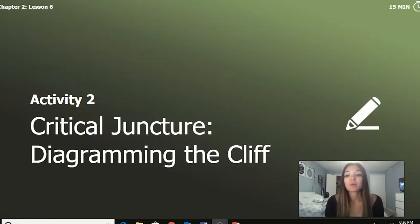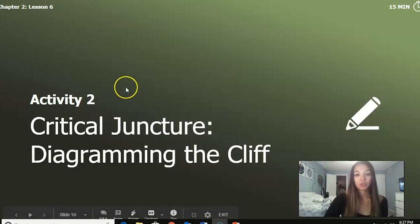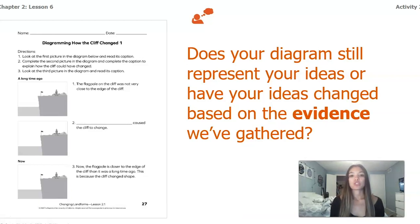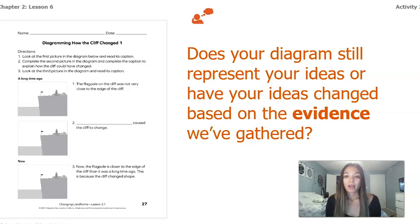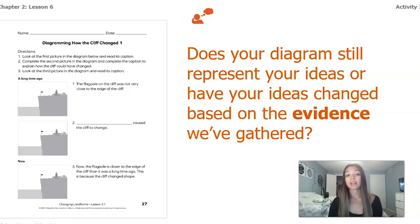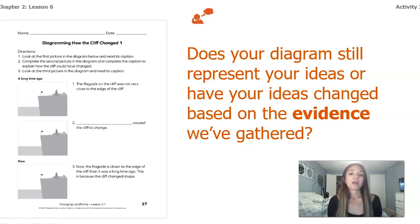We're going to be working on activity two for lesson 2.6, which is our critical juncture — diagramming the cliff. Remember, a diagram is an easier way to show something bigger. Does your diagram still represent your ideas, or have your ideas changed based on the evidence we've gathered? We worked on this diagram in our first lesson of chapter two, thinking about what might have caused the cliff to change. Go back into your packet, look at that activity, and think about whether your ideas are still the same or have changed.